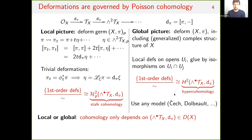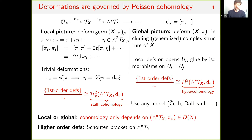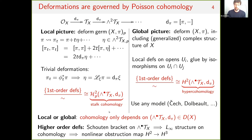Whether concerned with local or global deformations, the relevant cohomology only depends on the Poisson complex up to quasi-isomorphism of complexes of sheaves — it only depends on the Poisson complex as an object in the derived category of X. Furthermore, if you want to understand deformations to all orders, you use the Schouten bracket on polyvector fields to induce an L-infinity structure on the cohomology, assembling higher bracket operations to define a nonlinear obstruction map from H^2 to H^3. The first-order deformations which extend to all orders are those lying in the zero locus of this obstruction.